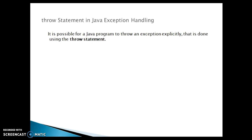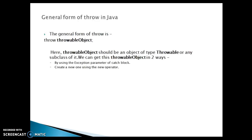When we talk about the throw statement in Java with respect to exception handling, it is possible for a Java program to throw an exception explicitly, and that is done by using a throw keyword. The general form of throw is: you write the throw keyword and after that a throwable object. The throwable object should be an object of type Throwable or any subclass of it.